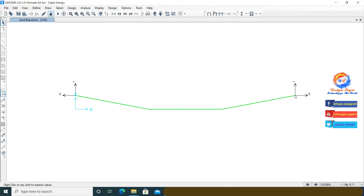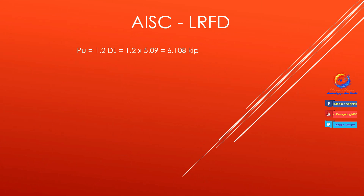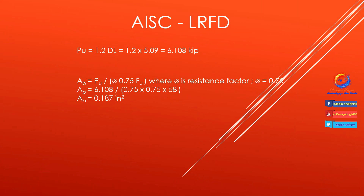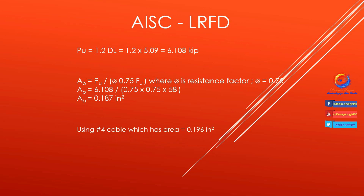Now let's design the cable using AISC LRFD and AISC ASD codes. For AISC LRFD, first calculate the ultimate tension force: PU equals 1.2 times dead load equals 1.2 times 5.09 equals 6.108 kips. For the required cable area: A equals PU divided by (φ times 0.75 times FU), where φ equals 0.75 is the resistance factor in LRFD. Using A36 grade steel, FU equals 68 KSI. The result is A equals 0.187 square inches. Number 4 cable has area 0.196 square inches, so we use a cable of 1/2 inch diameter.